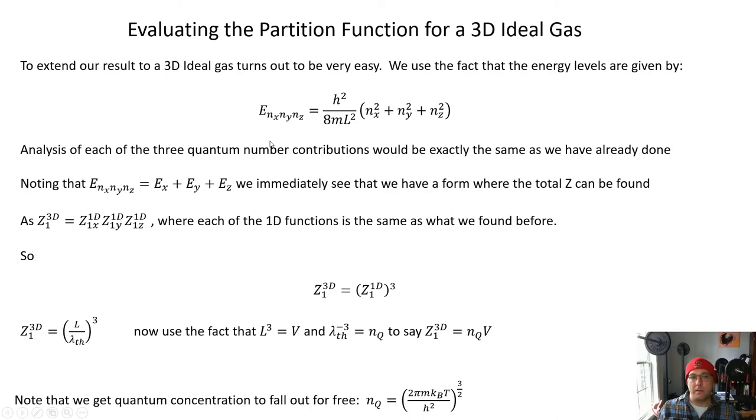In particular, if you note that you can write the total energy of the particle in the 3D box as the energy due to the x motions, y motions, and z motions, you can immediately see that you have essentially three degrees of freedom, three translational degrees of freedom if you want. And then the partition function is just going to factorize into a product of three 1d partition functions.